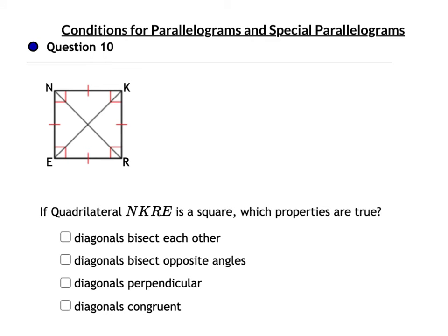In question 10, the quadrilateral is a square. Do the diagonals bisect each other? Yes, because a square is a parallelogram and diagonals bisect each other in every parallelogram. Do the diagonals bisect opposite angles? Yes — that's true in a rhombus, and a square is a rhombus. Are the diagonals perpendicular? Yes — true in a rhombus, and a square is a rhombus. Are the diagonals congruent? Yes — true in a rectangle, and a square has four right angles so it's a rectangle. All four properties are true for a square.